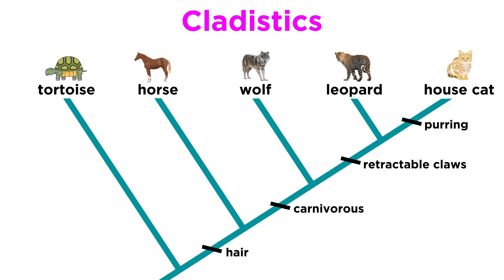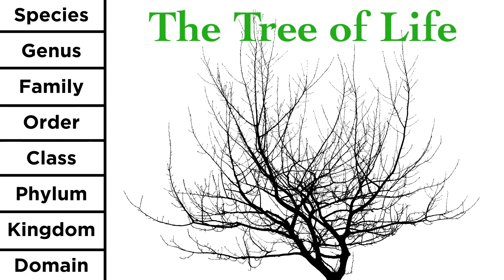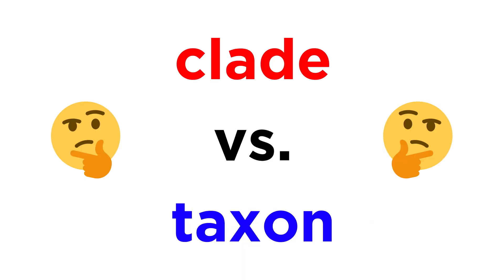In the previous tutorial, we began to learn about cladistics, so we are now familiar with the clade as the fundamental unit of phylogeny. But we have also learned about taxa when discussing the tree of life, which seemed to imply the same concept. So what's the difference between these two terms?